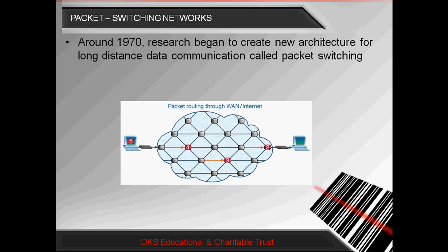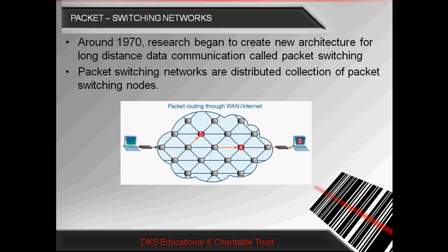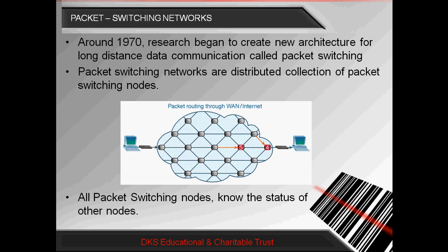Around 1970, new research began to create a new architecture for long distance data communication, called Packet Switching. A Packet Switching Network is nothing but a distributed collection of Packet Switching Nodes across the network. A Packet Switching Node may be a router that is used to transfer data from one place to another.